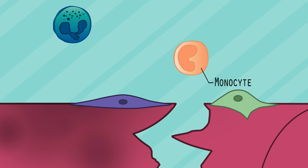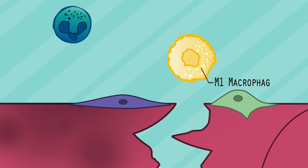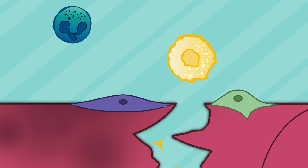Monocytes, another specialized type of white blood cell, also enter the tissue from the bloodstream and give rise to M1-type macrophages. They release chemicals to produce inflammation.